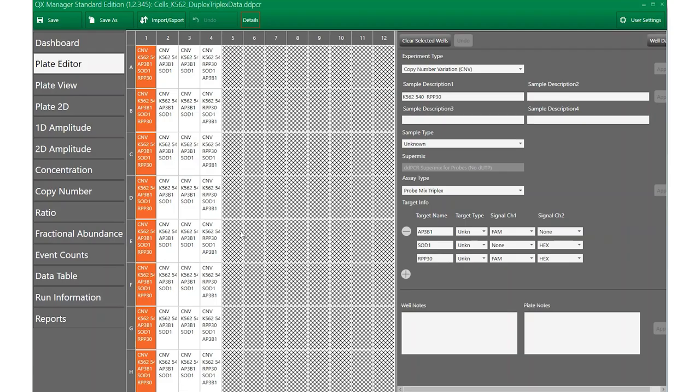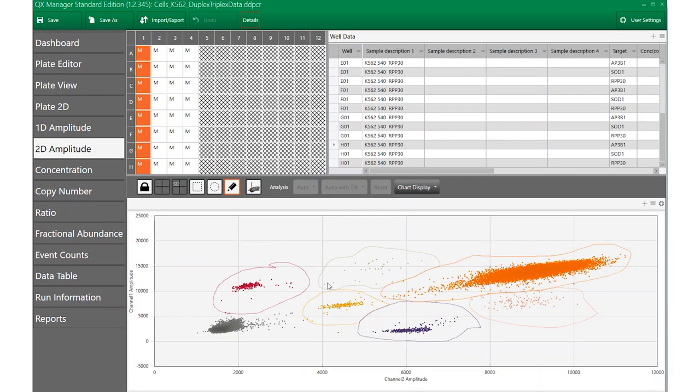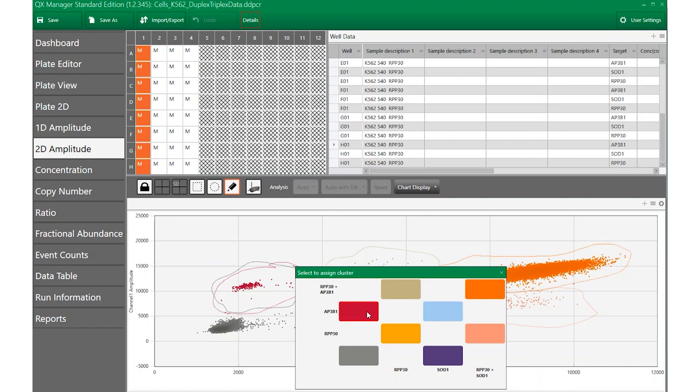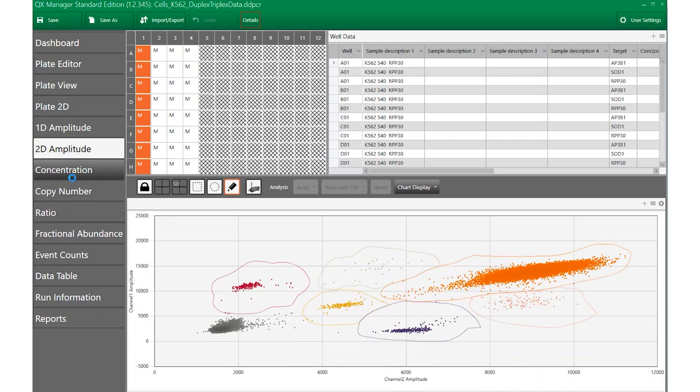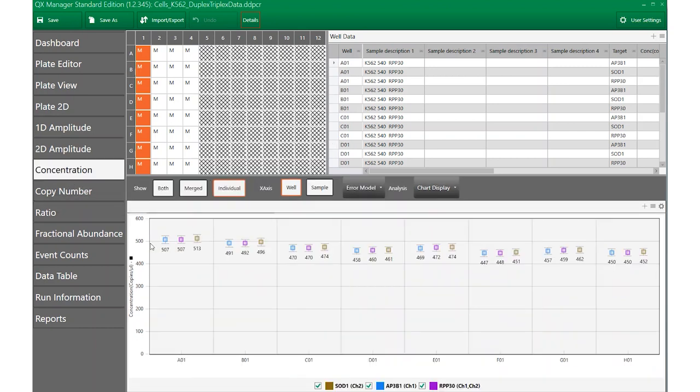Analyze the data using Qantasoft software version 1.7, Qantasoft Analysis Pro software, or QXManager software. QXManager software may be used for the triplexing method. After carefully labeling the wells, set the thresholds. The reported concentrations in copies per microliter from the software are directly equivalent to cells per microliter when performing the whole cell DNA workflow.